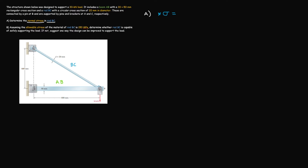In part A we're asked to determine the normal stress in rod BC due to this applied force. Rod BC is the diagonal member that runs from point C to point B, and below that is boom AB. To begin, we know that normal stress sigma is simply equal to P over A, where P is the axial load and A is the cross-sectional area of our member. The axial load is the force that acts along the longitudinal direction of the member, and it is normal to the cross-sectional surface.